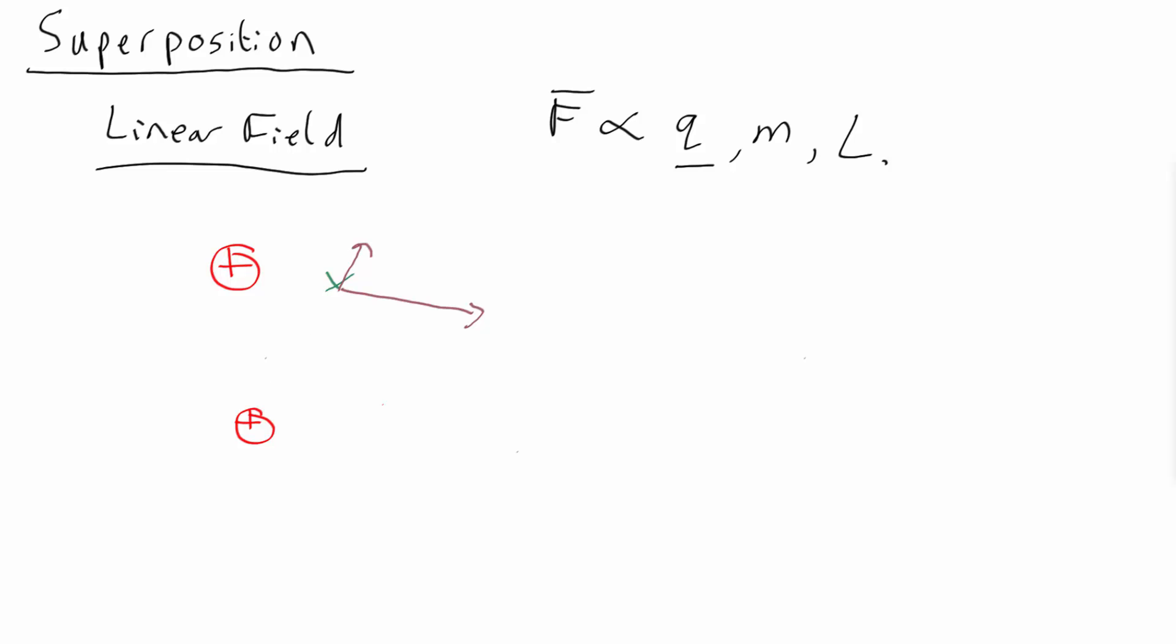How do you add them up? You can do it with a parallelogram. Draw a little imaginary parallelogram. And that gives you that. Or the way I prefer to do it is simply shift one of the arrows over. Let's say we take this arrow and we shift it over to here, so it's head to tail with the other one. Once again, that gives us the total electric field.